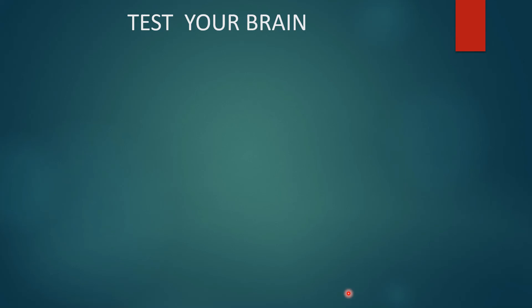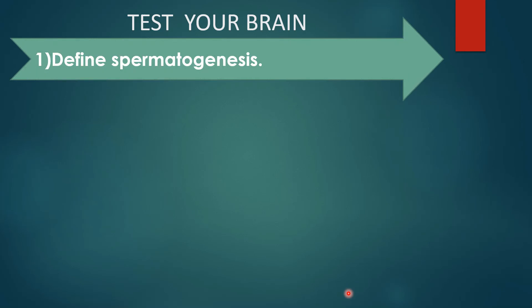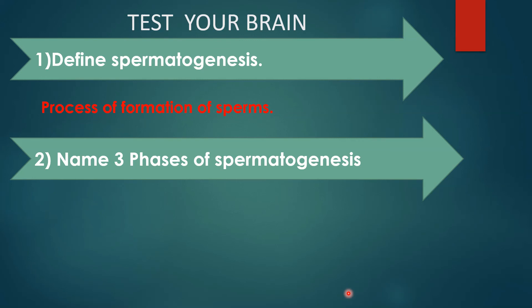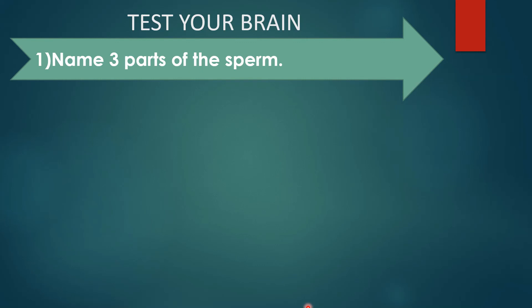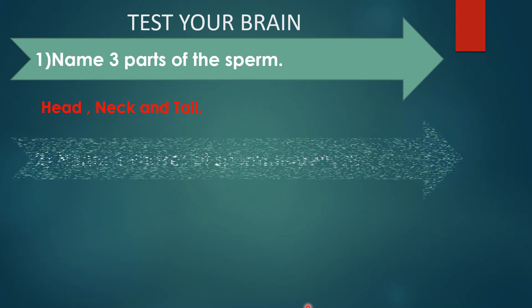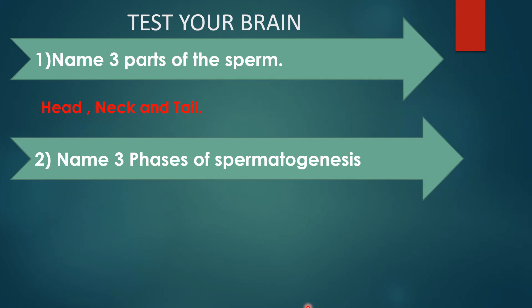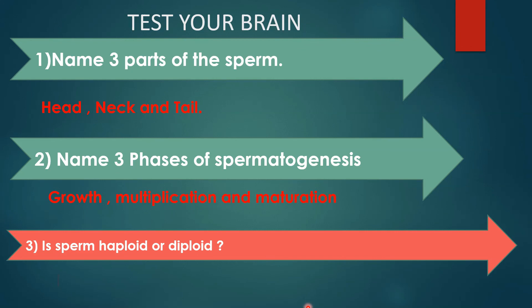Let's see how much you have understood. Define spermatogenesis: the process of formation of the sperm is called spermatogenesis. Name the three phases of spermatogenesis: growth phase, multiplication phase, and maturation phase. Which hormone is responsible for ovulation? Luteinizing hormone, that is LH. Name the three parts of the sperm: head, neck, and tail. Is sperm haploid or diploid? The sperm is haploid.